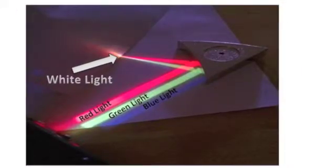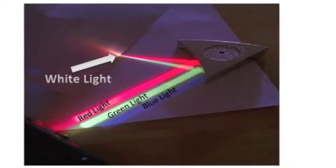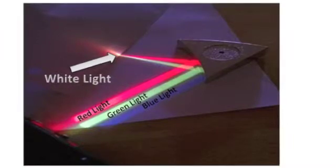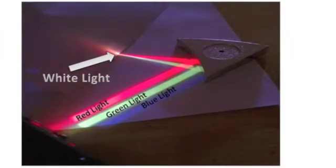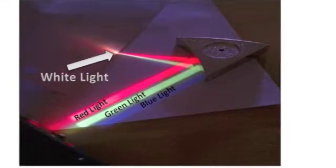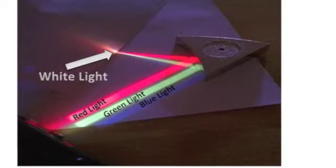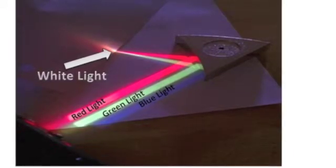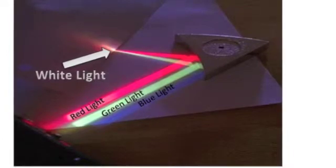Red, green, and blue are known as the additive primary colors because when added in varying proportions, they can form all the colors of the spectrum. When all three additive primary colors are added together, white light is produced. This picture shows white light being passed through red, green, and blue filters. The lights are reflected off a curved mirror and combined again to form white light.